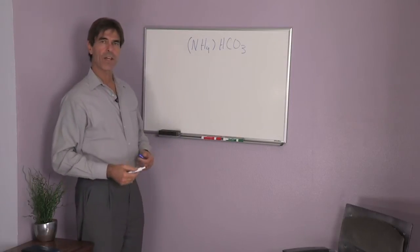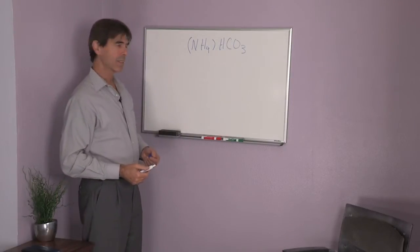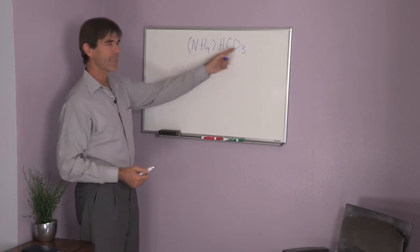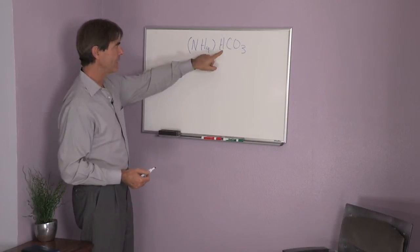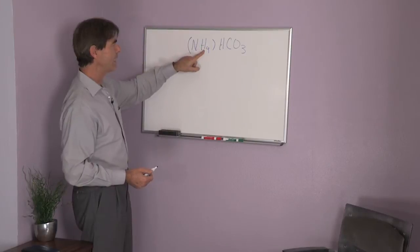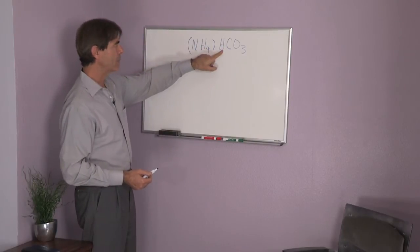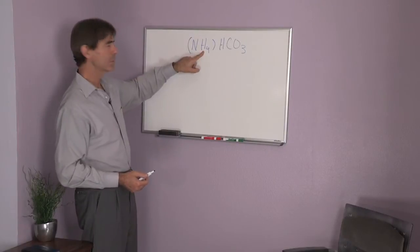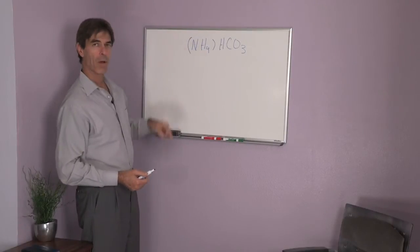So, in order to figure out the mass fraction of hydrogen, we have to look at where we have hydrogen in this formula. We have it here and we have it here. We have one atom of hydrogen in the molecule and four atoms of hydrogen in this part of the molecule.